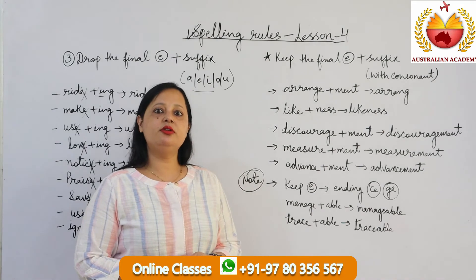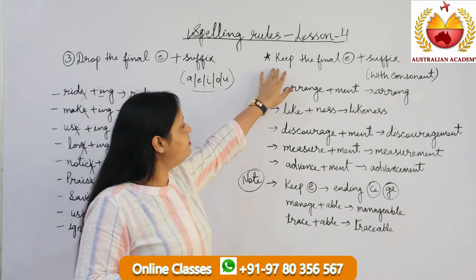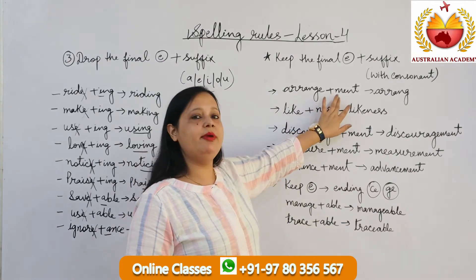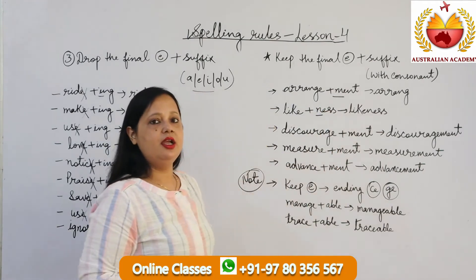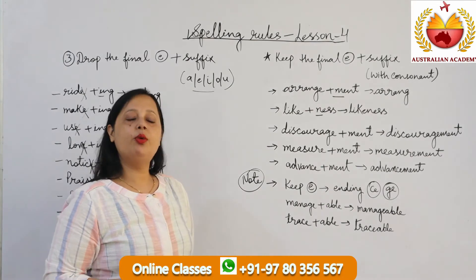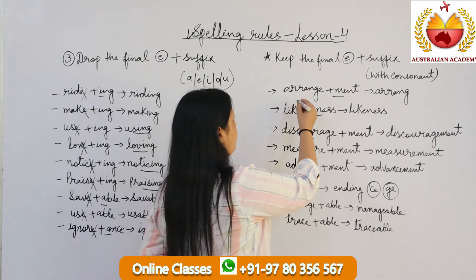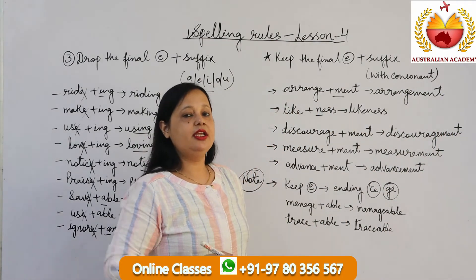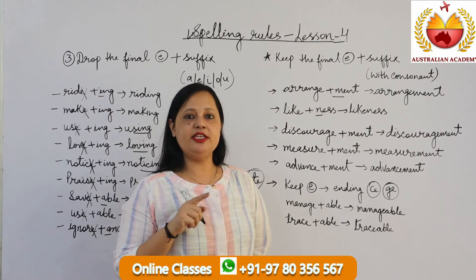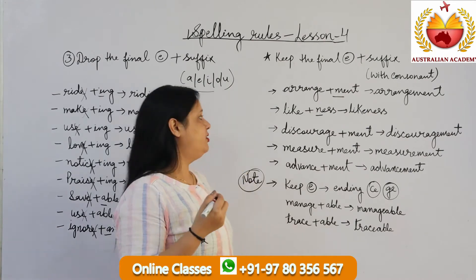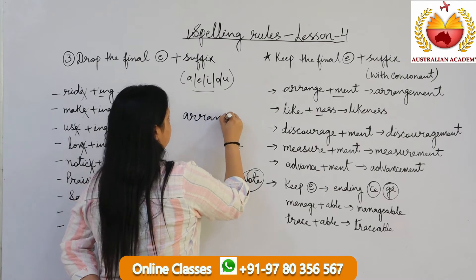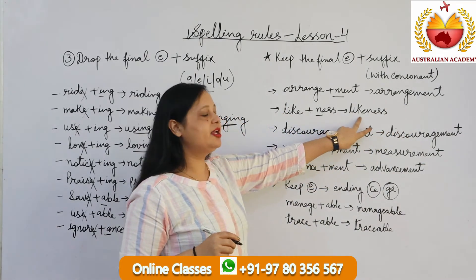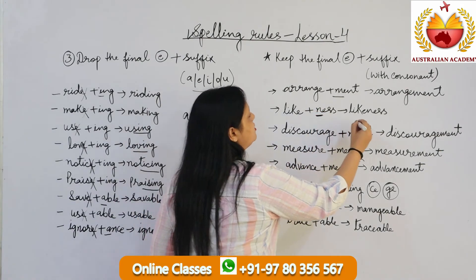Now we will talk about situations where we do not remove the 'e' — we just keep it. Keep the final 'e' if you are going to add a suffix that starts with a consonant. Consonants are like 'm' in 'ment' or 'n'. So we do not remove the ending 'e'. For example, 'arrange' plus 'ment' becomes 'arrangement'. But 'arrange' plus 'ing' — we remove the 'e' — becomes 'arranging'. Also, 'like' plus 'ness' becomes 'likeness' because 'ness' starts with a consonant.